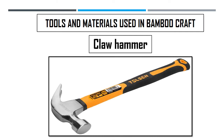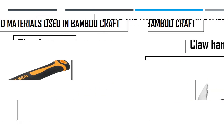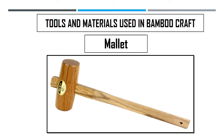The claw hammer is a tool used for driving and pulling out nails, and it is made of high quality steel. The next tool is the malay, also known as a wooden hammer. It looks like a claw hammer but is made of hard wood. Its handle is fastened securely with wedges, and it is used for driving a chisel — not for nails.